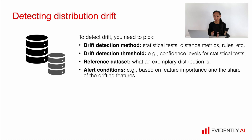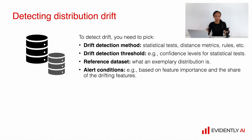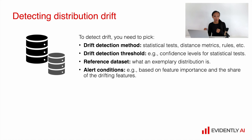How can we detect data drift? There are quite a lot of drift detection methods such as statistical tests, probabilistic methods, distance metrics, heuristics, rules, and so on. To detect whether a particular feature has drifted, we need a drift detection threshold, and those thresholds can be very different depending on the method — for example, a p-value for statistical tests or a numeric threshold for distance metrics. If we use the distribution comparison approach, we need reference data as the basis of comparison. And if we have many models in production with many features, we need alerting conditions so we don't trigger an alert after each individual feature drifts.